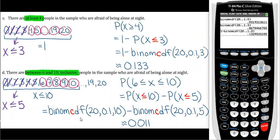Okay, and then even here where you have two binomial CDFs in part D, you can still do that all in one line. That way you're getting the most accurate answer.